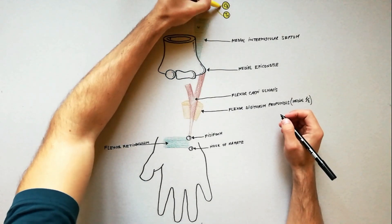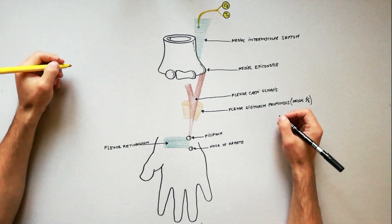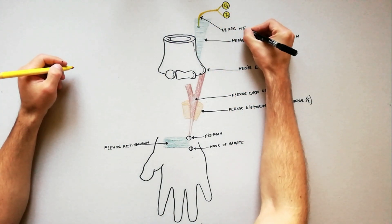The ulnar nerve arises in the axilla from the medial cord of brachial plexus, receiving its fibers from C8 and T1.